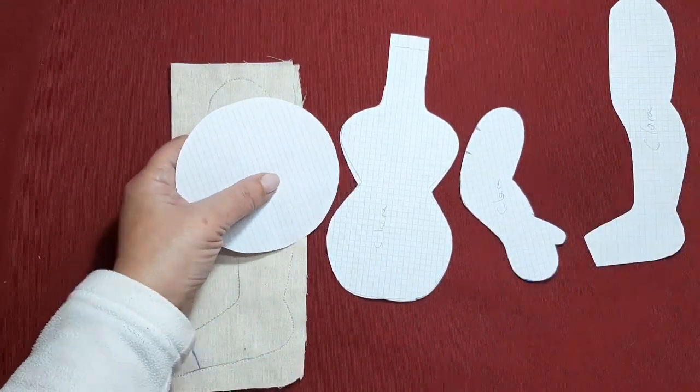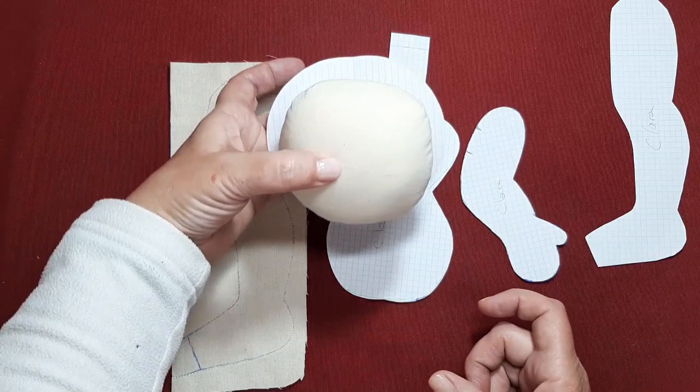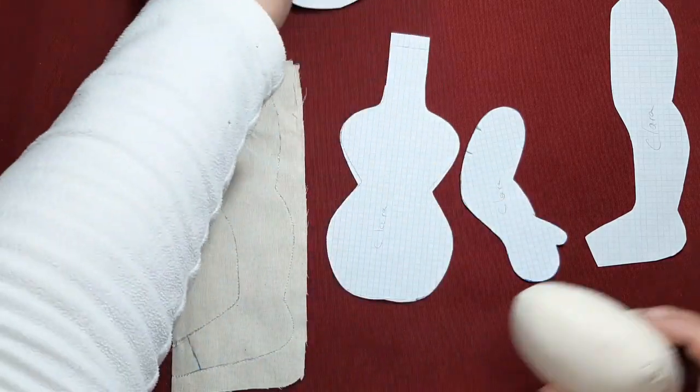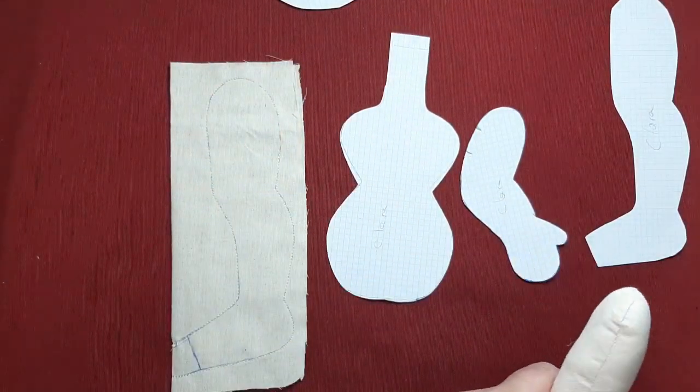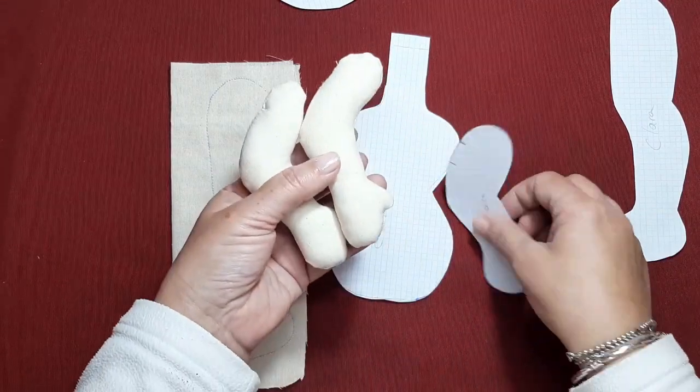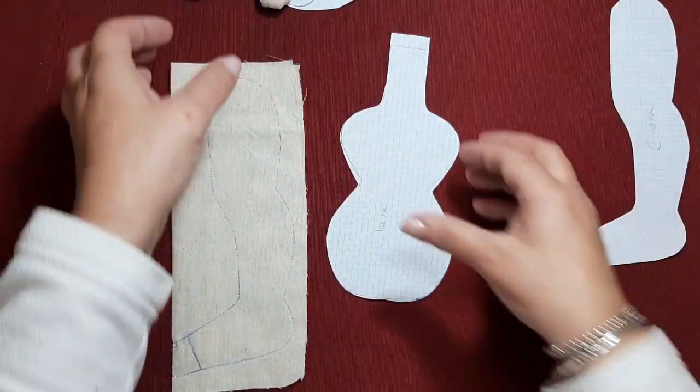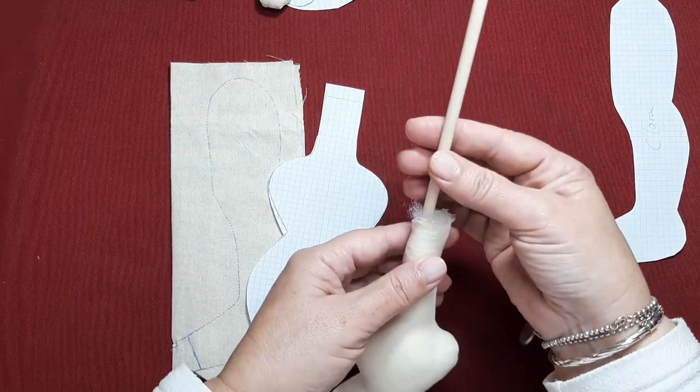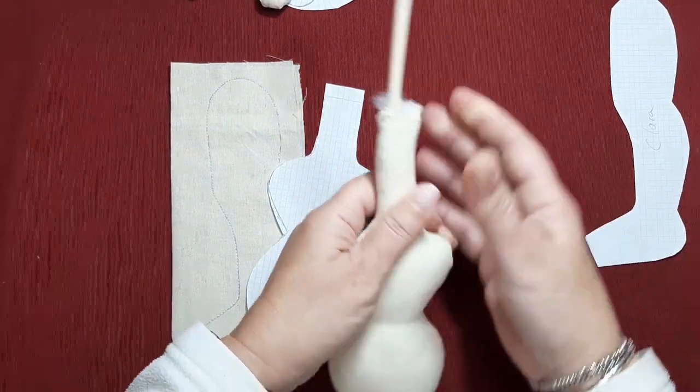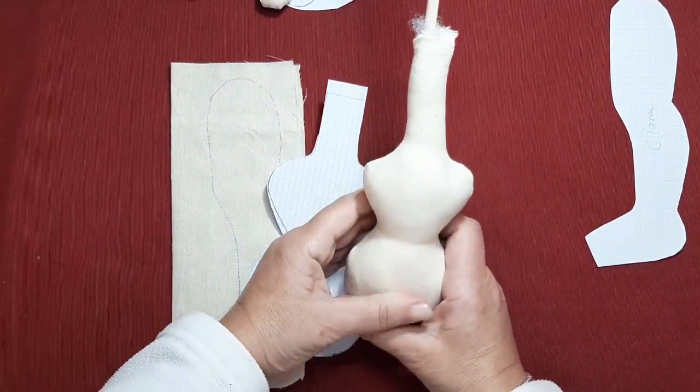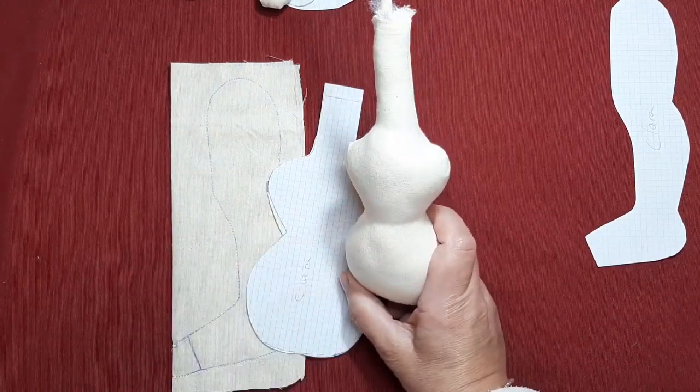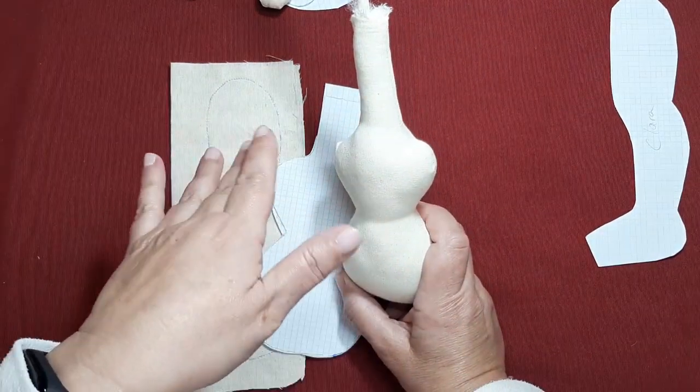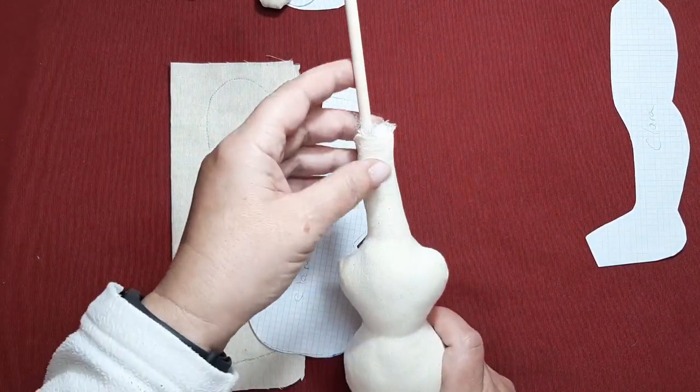En esta ocasión, mirad, la carita la he hecho redonda, los bracitos ya los tengo también rellenos. El cuerpo, muchas me habéis preguntado si no le pongo palo, normalmente no lo hago. Hoy sí que le voy a poner a nuestra muñequita Clara porque necesito que me aguante el peso de la cabeza.